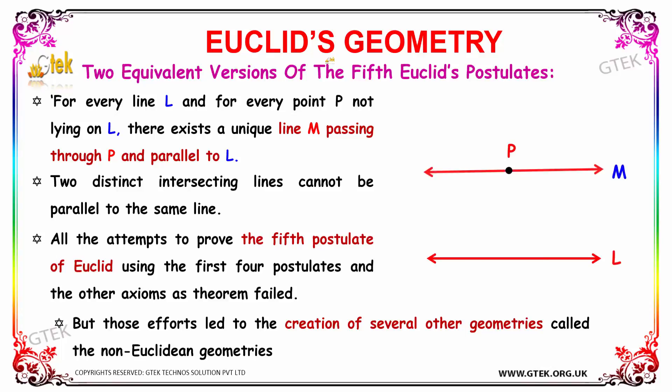Now let's discuss the two equivalent versions of the 5th Euclid's postulates. For every line L, you can see L, for every point P, this one is P, not lying on L, there exists a unique line M passing through P and parallel to L.